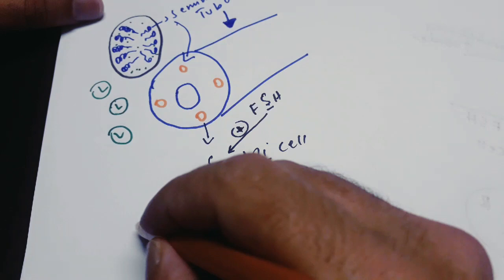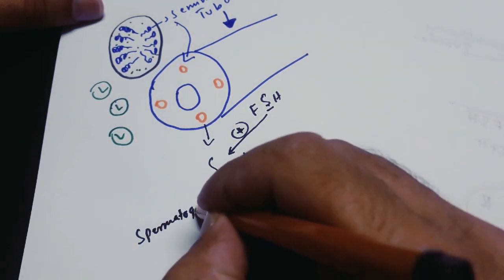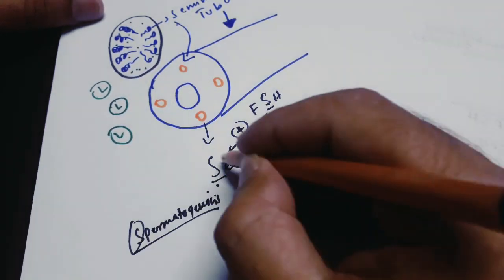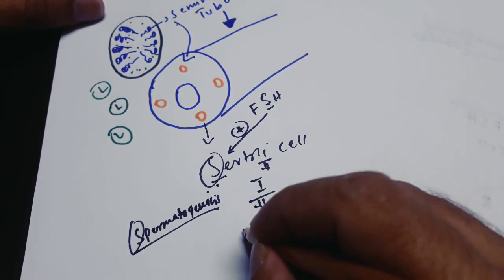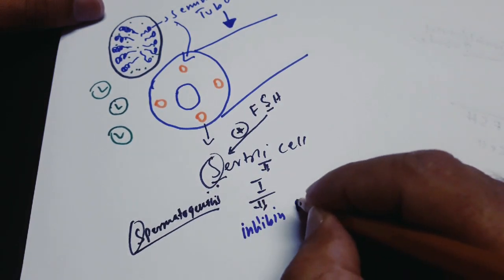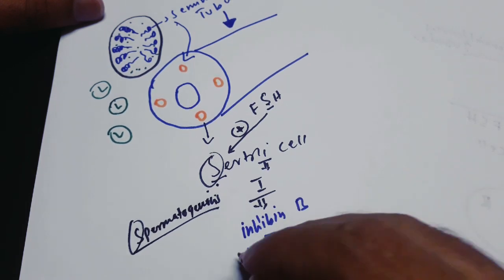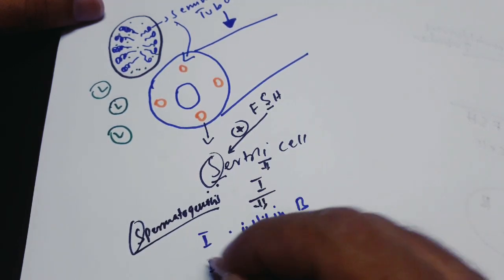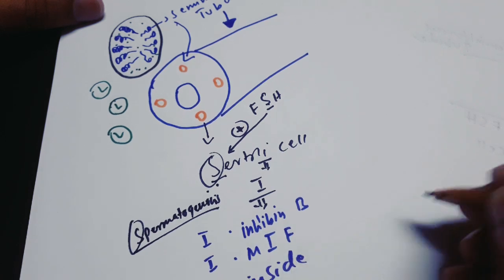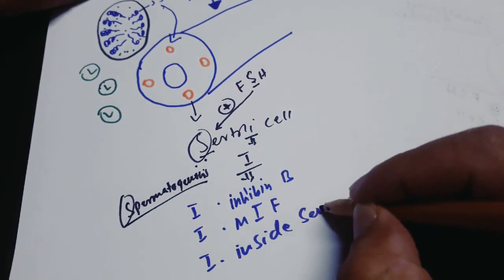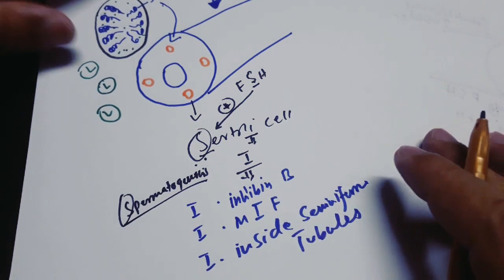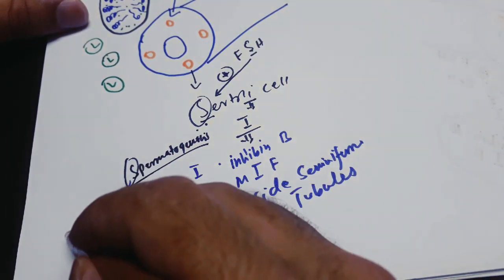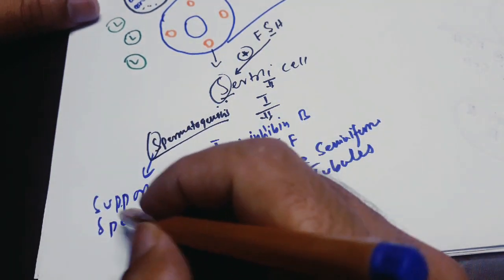Sertoli cells help in spermatogenesis — from the 'S' in Sertoli, remember Sertoli cells support sperm synthesis. Sertoli cells secrete inhibin B. Sertoli cells also secrete MIF (Müllerian inhibitory factor). Sertoli cells are located inside the seminiferous tubules.